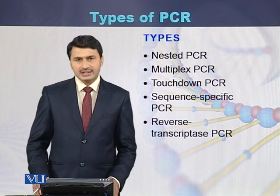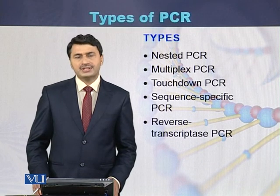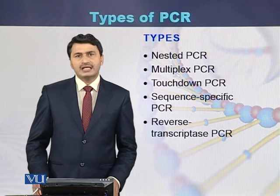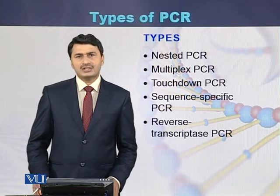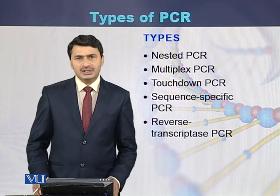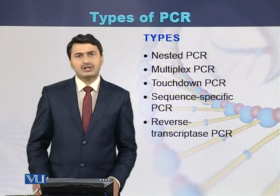The next type of PCR is called touchdown PCR. In touchdown PCR, during each cycle, the annealing temperature lowers down.